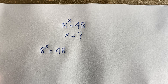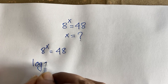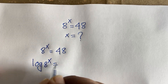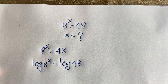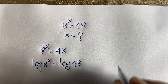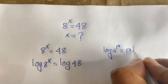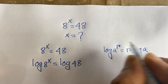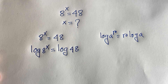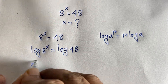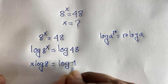Now I apply the natural log to both sides. So log of 8 to the power x is equal to log 48. Using the logarithm rule — log a to the power r equals r log a — the exponent moves to the front, giving us x log 8 is equal to log 48.